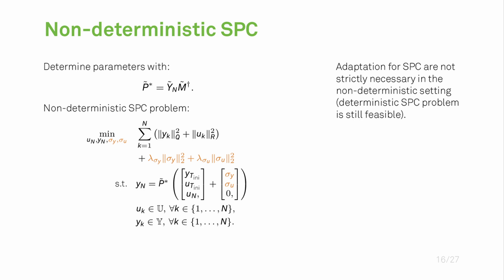We also need to talk about non-deterministic SPC. For non-deterministic SPC we start by determining the parameters of our prediction model in the same way as before and we formulate the problem as shown here on the left hand side. The changes are again marked in orange. The first thing I want to note is that these changes are not strictly necessary, so in comparison to DeePC, SPC is also feasible if we do not do these changes. But for the sake of comparison we add exactly the same changes so that we can then show and discuss the similarity to the DeePC formulation.